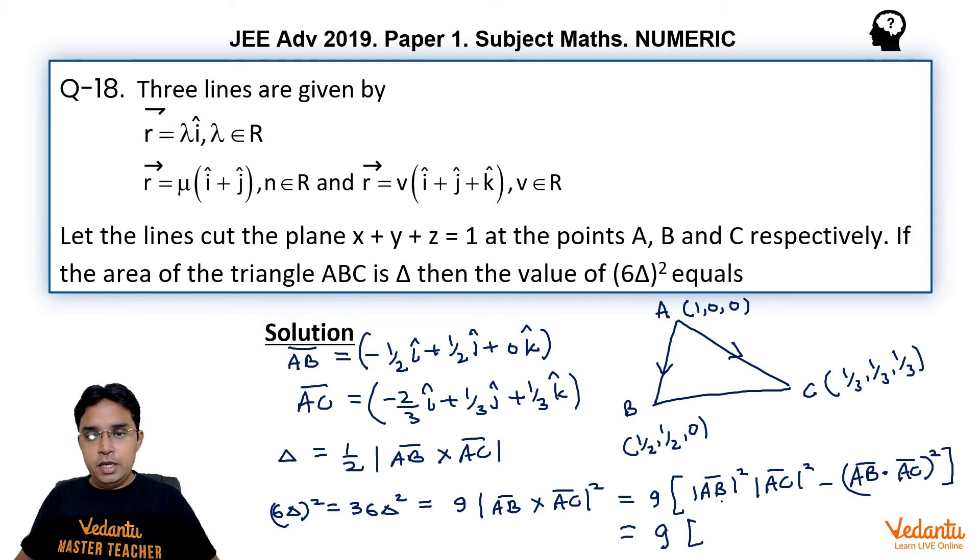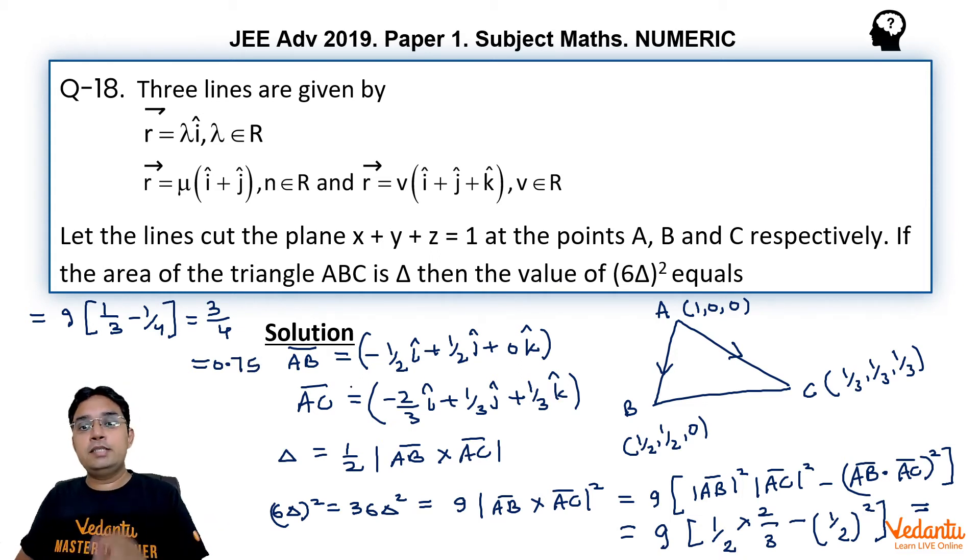So we can write this as 9 into magnitude of AB square, AC square minus AB dot AC whole square. So 9 times AB square, half square plus half square plus 0 square. So it would be 1 upon 2 here. AC square is 4 upon 9 plus 1 upon 9 plus 1 upon 9, so 6 upon 9 that is 2 upon 3 minus their dot product. This would be 1 upon 3 plus 1 upon 6 so that is 1 upon 2 whole square. So let me do this calculation here. So we get 9 into 1 upon 3 minus 1 upon 4 which comes out to be 3 upon 4 after calculation. Also you can write this as 0.75. So 0.75 is the answer for this question.